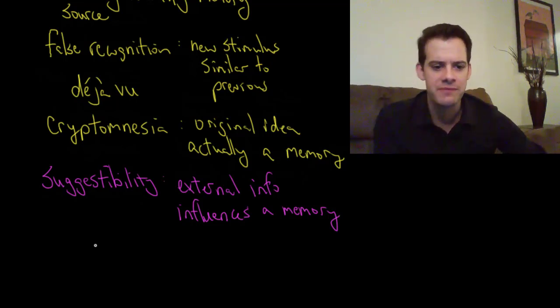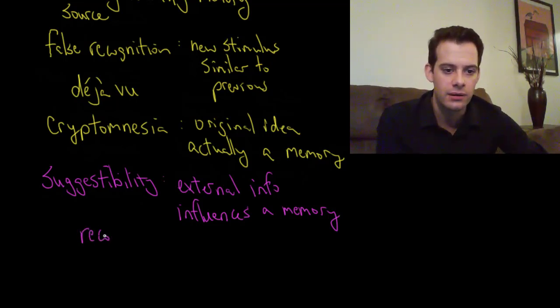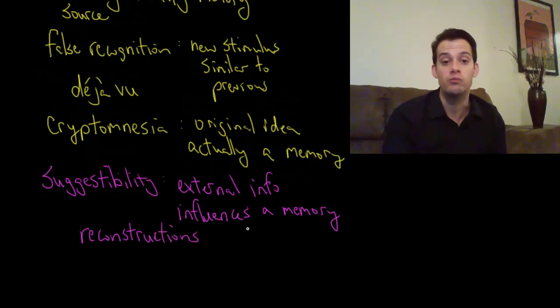And this brings up the idea that our memories are reconstructions. They're not recordings and I said this in an earlier video, the idea that we don't record events the way that a computer stores information or a video camera records something. Instead it's an active process. And each time we recall a memory there's a chance that new external information is going to influence it and change it. So our memories are reconstructions of events. They're not recordings.